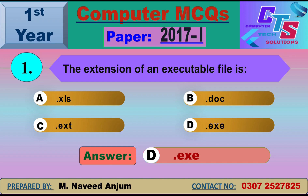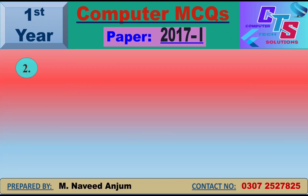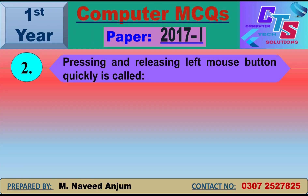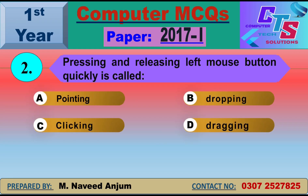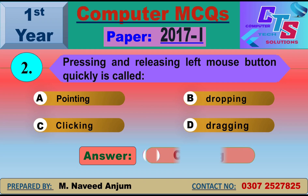Question number 2: Pressing and releasing the left mouse button quickly is called what? When we press and release the left mouse button, we call it clicking. Option C — click — will be the right answer.